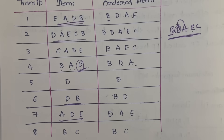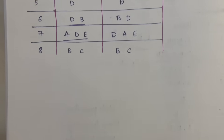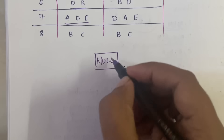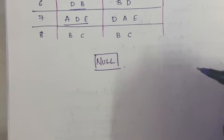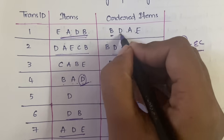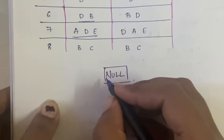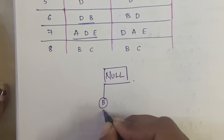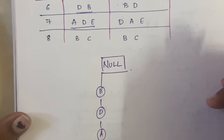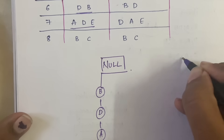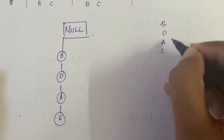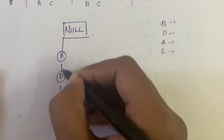To construct the FP Growth tree, initially the root node will be null. Next, in the first transaction we have B, D, A, E — so from the root null, you construct the path B → D → A → E like that. Each node gets an occurrence count; since they have occurred once, all are set to 1.